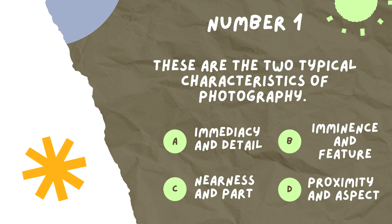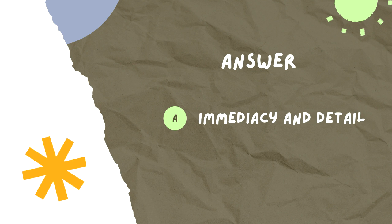Number one: These are the two typical characteristics of photography. A, imagery and detail. B, nearness and part. C, imminence and feature. D, proximity and aspect. The answer is A, imagery and detail.